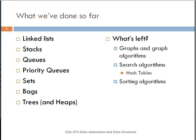The things we've looked at so far include linked lists, stacks, queues, priority queues, sets, bags, trees, and heaps. What we've yet to cover, and which we will be covering in the next three or four weeks, are graphs and graph algorithms, search algorithms, including hash tables, and then sorting algorithms.